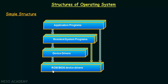In this structure, at the bottommost, we have the ROM BIOS device drivers — think of this as your base hardware. On top of this, we have the device drivers, then we have the resident system programs, and then the application programs. The device drivers have access to this basic hardware, and the resident programs have access to the device drivers as well as the basic hardware. Even the application programs have access to the resident programs as well as the base hardware.